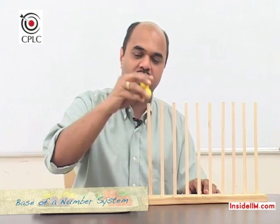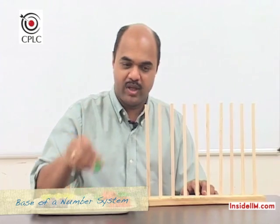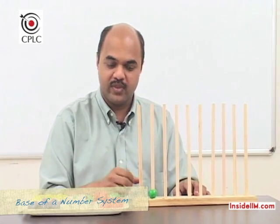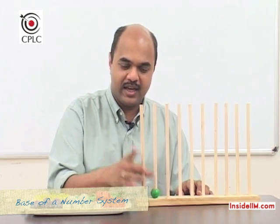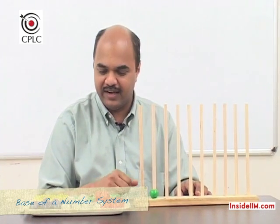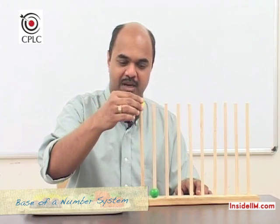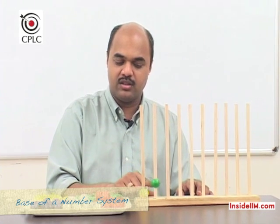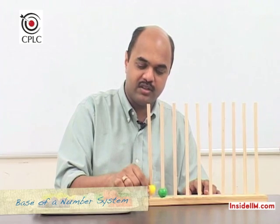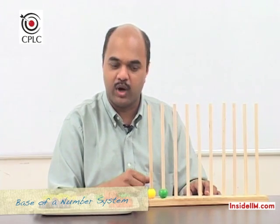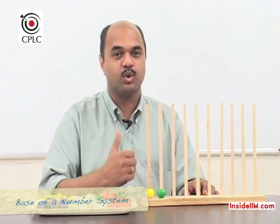If I have to write down the number 8 in this base system, I would have to put in a bead in the second column, which has a place value of 8, and hence this number would mean 8. If I have to write down the value 9, I would put one bead in the second column with place value 8 and one bead in the first column with place value 1, and these two put together would make 9.